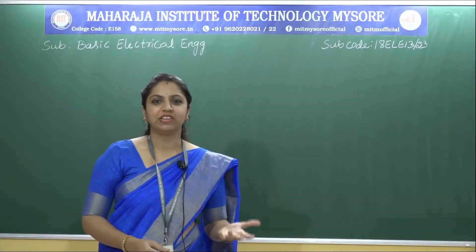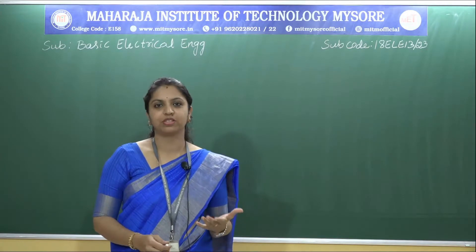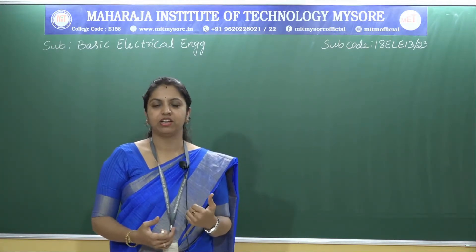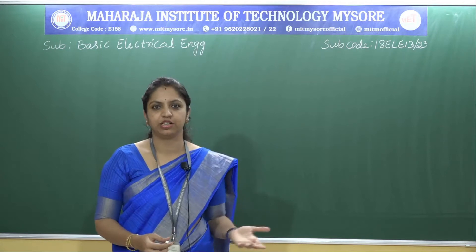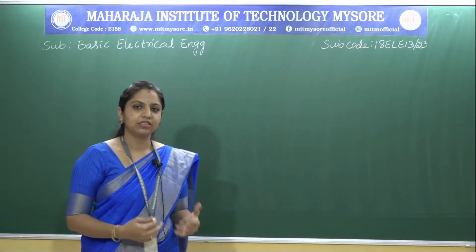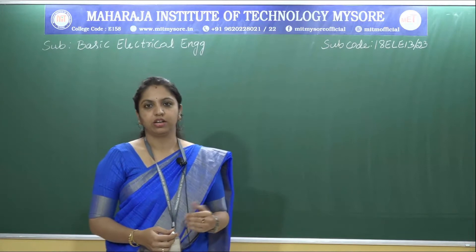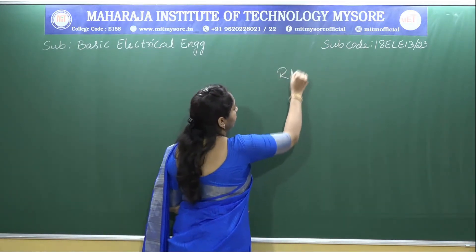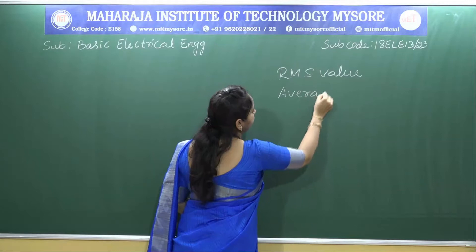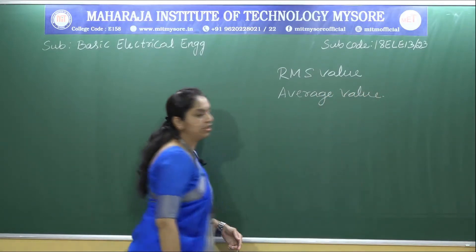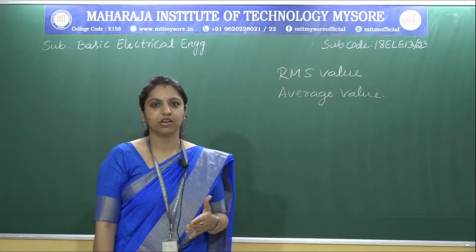Hello everyone. In the previous session I explained the generation of alternating quantity and the importance of considering a sinusoidal waveform as an alternating quantity, and I solved a few problems based on the instantaneous equation. In this session I will be deriving two equations related to alternating quantity: RMS value and average value. These two are very important equations to represent alternating quantity.